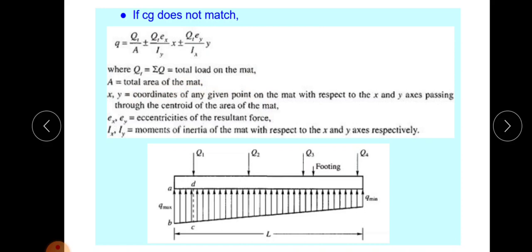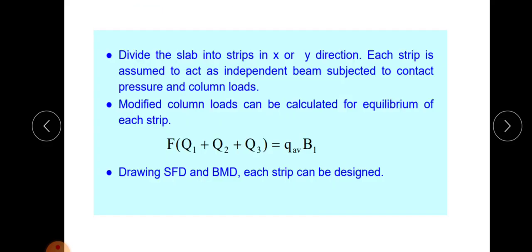The detailed structural design aspect is not needed since this is a geotechnical subject, so just write these procedures. Divide the slab into strips in the x or y direction. Each strip is assumed to act as an independent beam subjected to contact pressure and column load. The modified load can be calculated for each strip to draw the SFD and BMD.